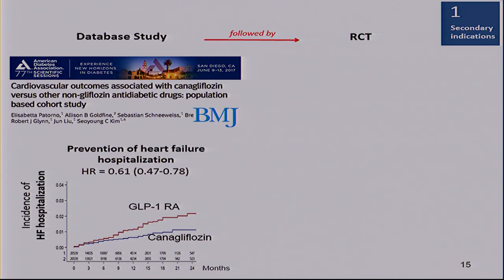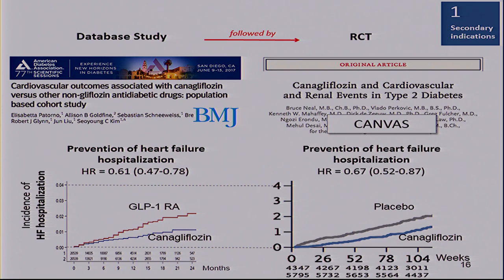A study in the oral antidiabetic space — canagliflozin — we presented at the ADA meeting last year before the CANVAS trial was published. Actually they were both released on the same day, but we were blinded towards the CANVAS findings. Compared to the GLP-1s, we saw an almost 40% relative risk reduction with regard to heart failure hospitalization — an outcome we observed quite well in these data sources. And of course CANVAS found something very similar to what we saw before the RCT was released.